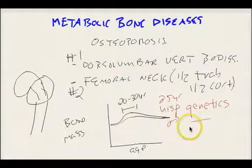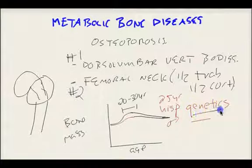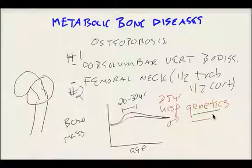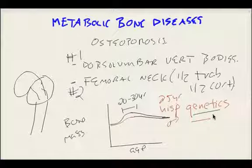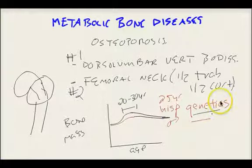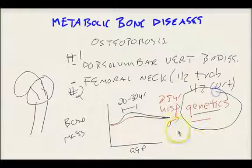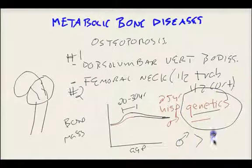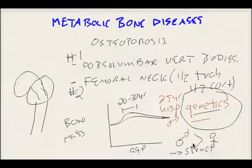If we compared African Americans versus Caucasians, African Americans have greater bone density, and the role of genetics comes into play — just like Caucasians have a greater bone mass or bone density than the Asian population. Genetic factors play a major role in bone mass. We know males have significantly greater bone mass than females due to the structural differences in the sexes.